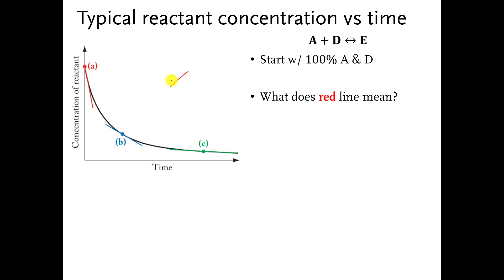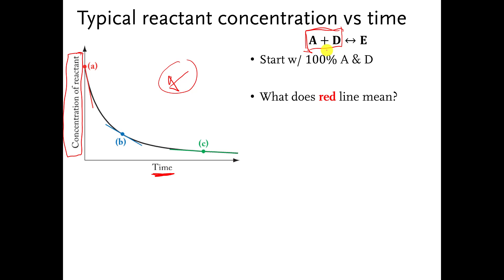This is just a generic pretend chart that shows the amount of time that's gone by and the concentration of some reactant in a chemical reaction. Reactants are the things that you start with on the left side of the arrow in your chemical reaction, so this is just some completely made-up chemical reaction.